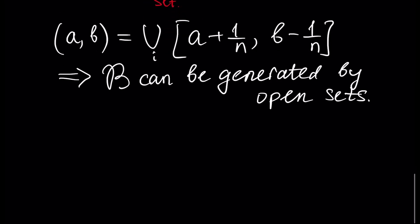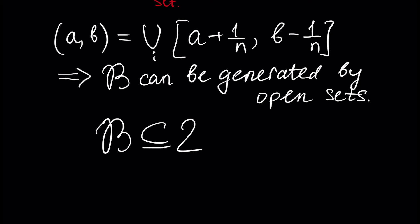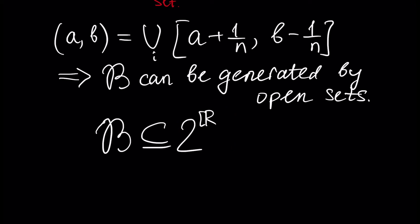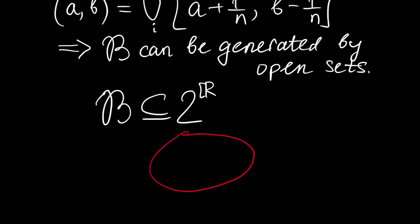We have to say that our Borel sigma algebra B is strictly included in the power set. Since the power set for ℝ — when our set X is the set of real numbers — is the set of all subsets of the real line, this is a very complicated and very big set, and our Borel sigma algebra is strictly included in it. It means that it's very hard to construct a set which is not a Borel set.